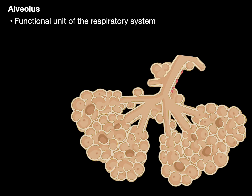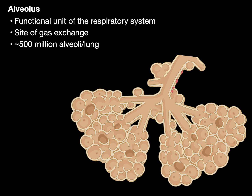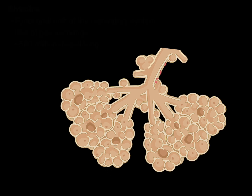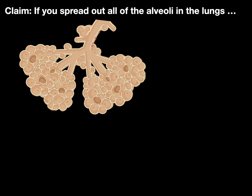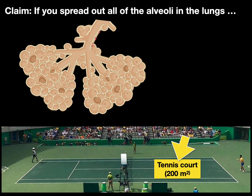The alveolus is the functional unit of the respiratory system because this is the site of gas exchange. There are approximately three to five hundred million alveoli in each of our lungs, and there's a claim that if you spread out all the alveoli in our lungs, they cover a tennis court surface area of 200 meters squared.